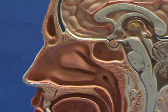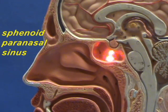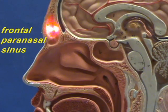Before leaving the nasal cavity, let's note a couple of paranasal sinuses that you can see here. This is a paranasal sinus within the sphenoid bone, and right here is a paranasal sinus within the frontal bone.